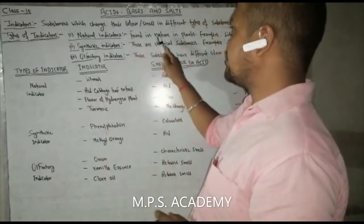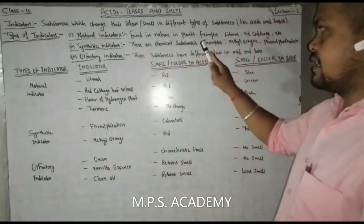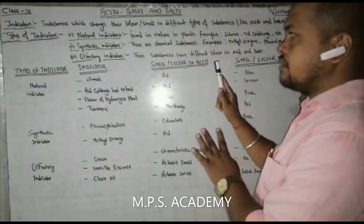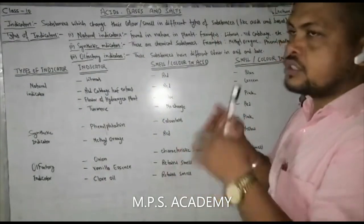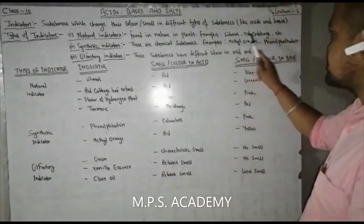Natural indicators are those found in nature, in plants. What is a natural indicator? It is a substance found naturally in plants.